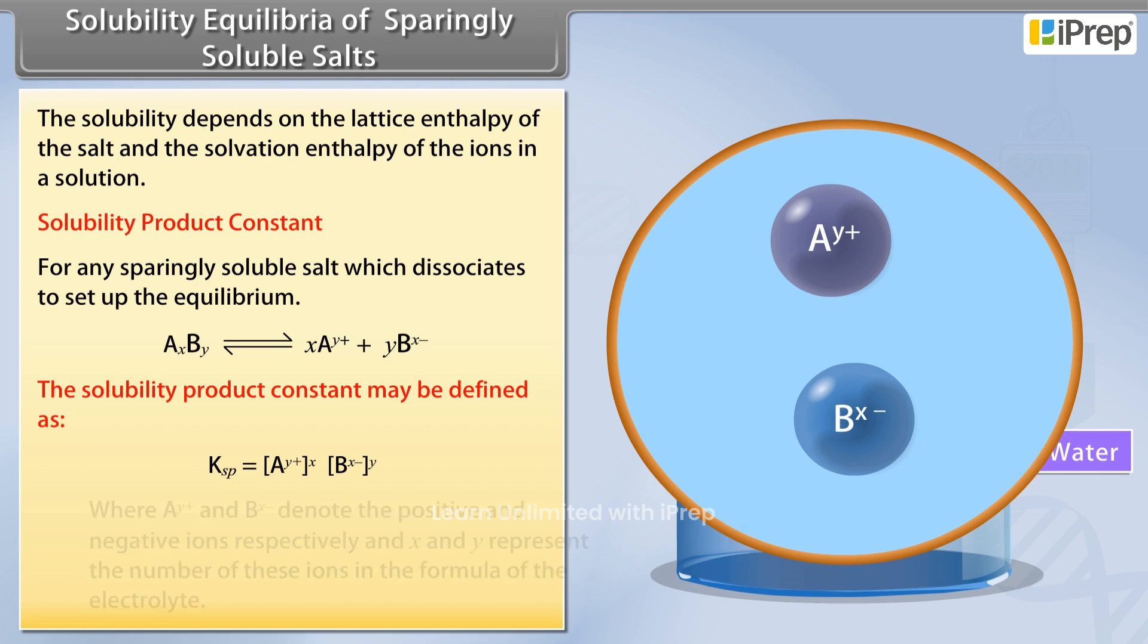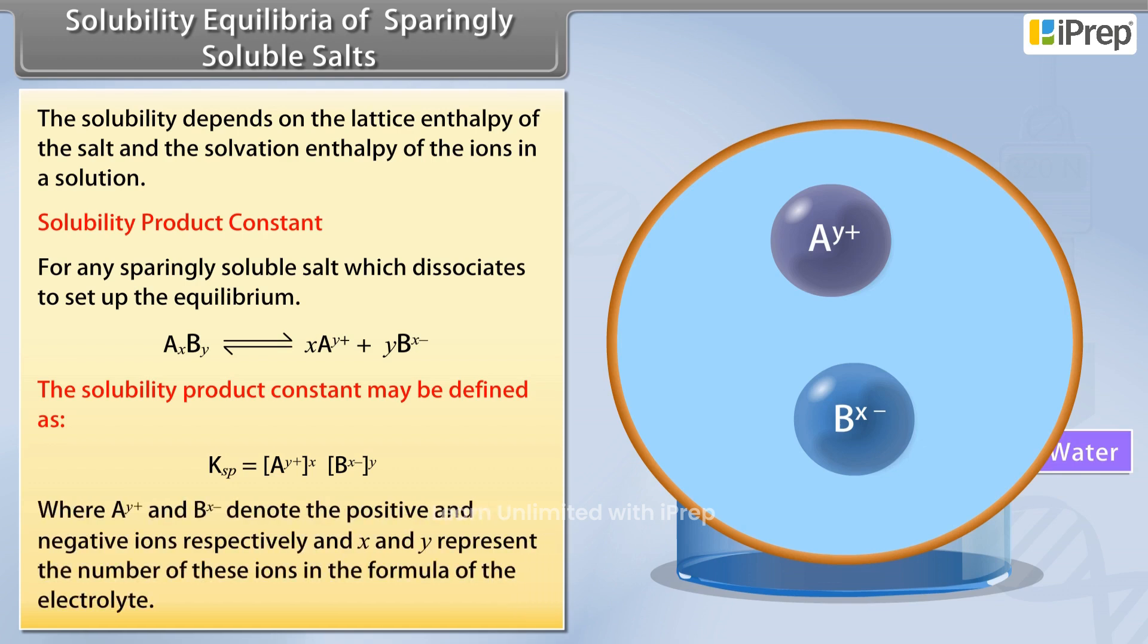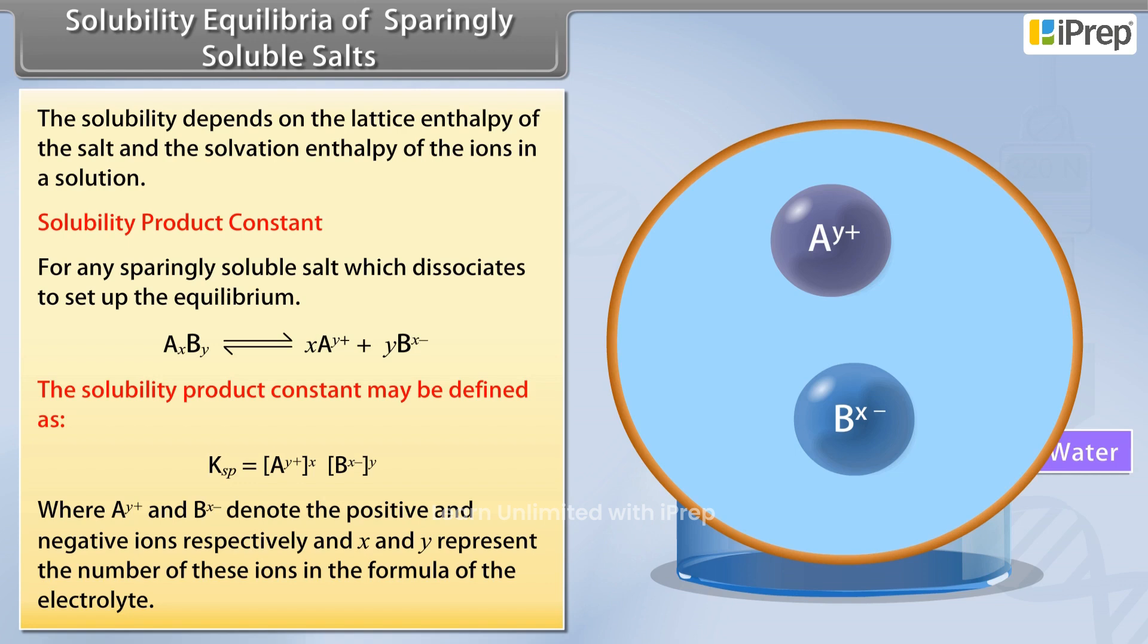Whereas A^y+ and B^x- denote the positive and negative ions respectively, and x and y represent the number of these ions in the formula of the electrolyte.